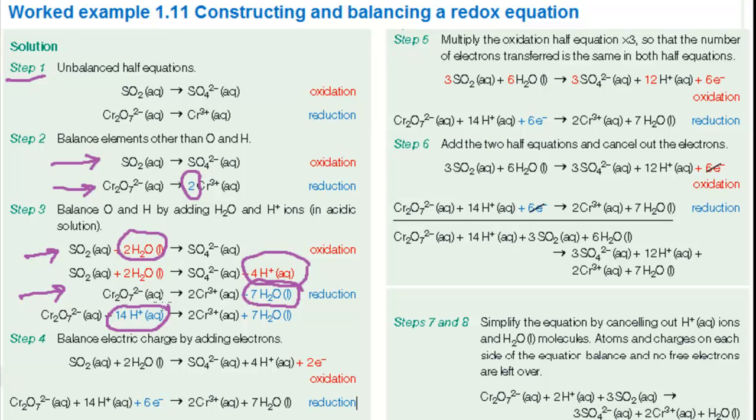That's the hard bit over. In step four you count up the charges on each side of the equation and balance them by adding electrons. In the oxidation, no charges on the left hand side but a total of two plus on the right hand side which you balance by adding two electrons.